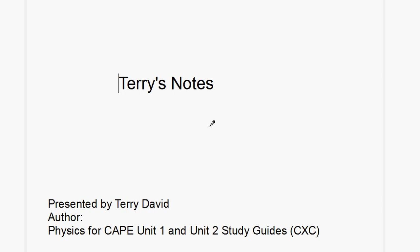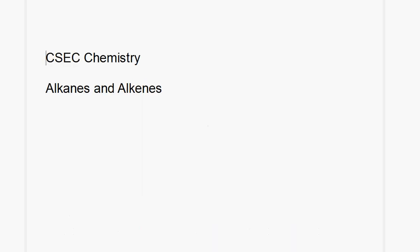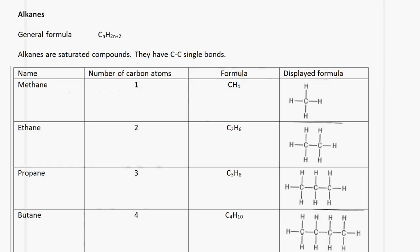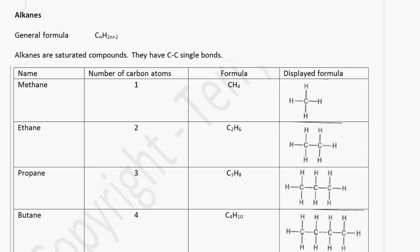Welcome to another episode of Terry's Notes. Today we're going to look at alkanes and alkenes. The general formula for an alkane is CnH2n plus 2. Alkanes are saturated compounds. They have carbon to carbon single bonds present in them.